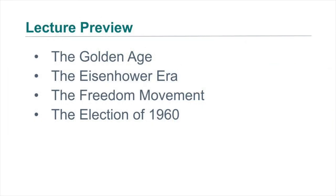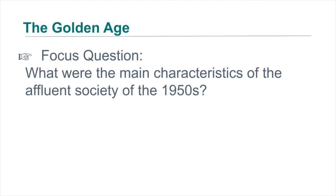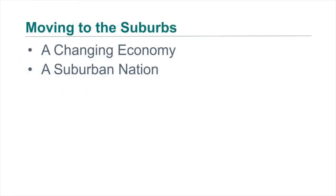Let me give you a lecture preview of what we're going to talk about in these two lectures: the Golden Age, the Eisenhower era, the freedom movement, and the election of 1960. The focus question for the Golden Age is: what were the main characteristics of the affluent society of the 1950s? The first thing to mention is moving to the suburbs.